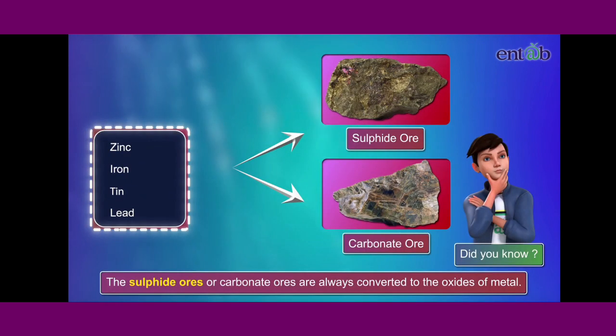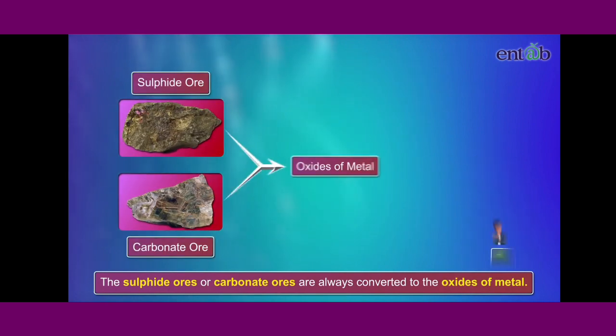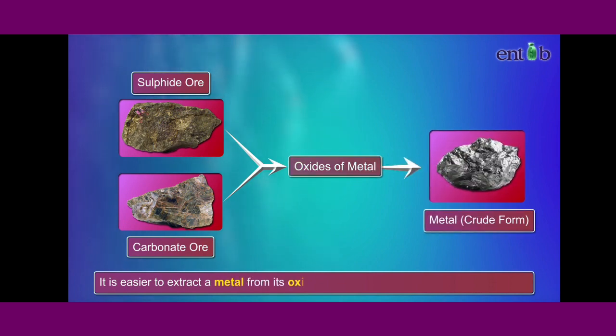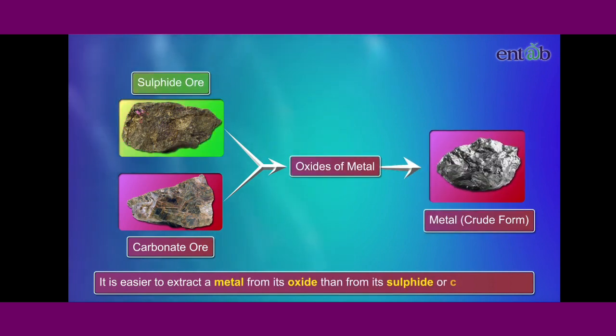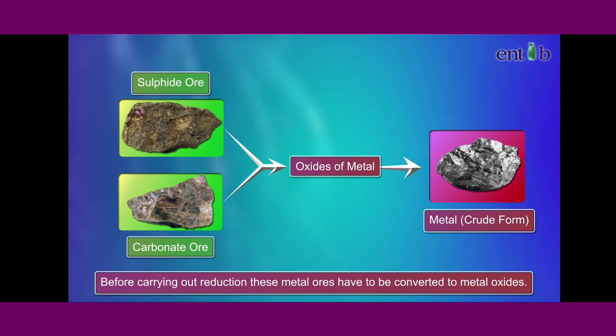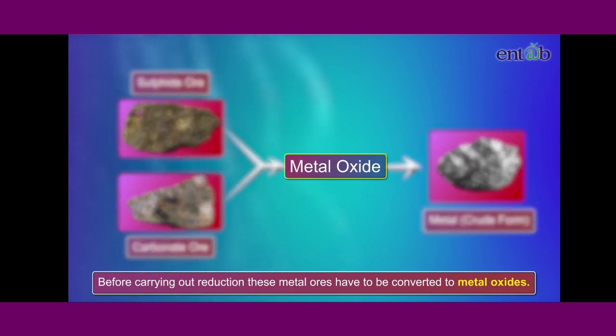Did you know that sulfide or carbonate ores are always converted to the oxides of metal? As it is always easier to extract a metal from its oxide than from its sulfide or carbonate ore. Hence, before carrying out reduction, these metal ores have to be converted to metal oxides.